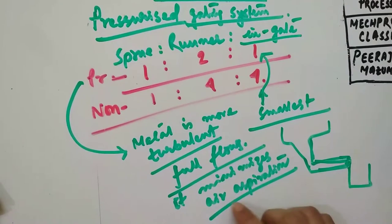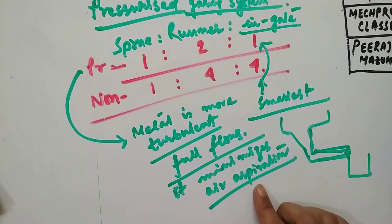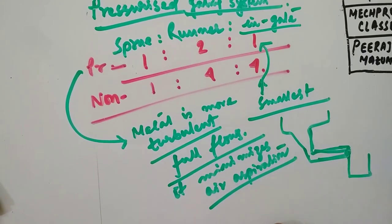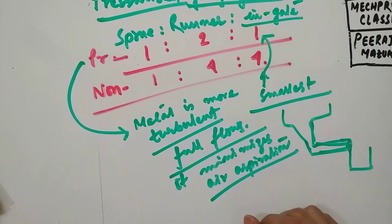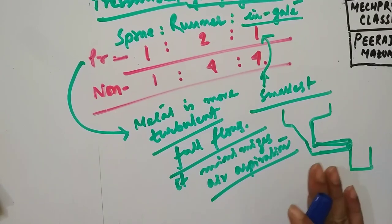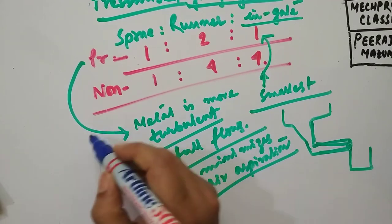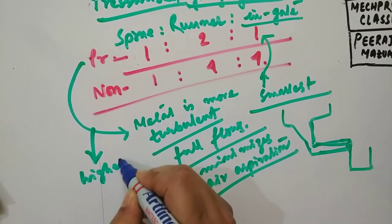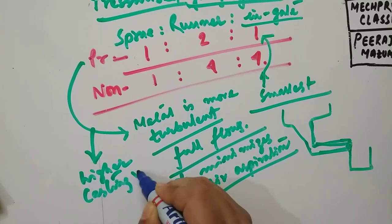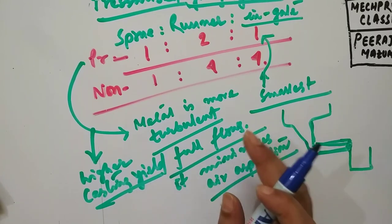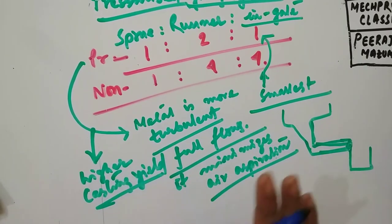If the air aspiration effect is not maintained, the casting will be defective, as because the air will be entrapped during solidification of the metal and the final product will be defective. When multiple gates are used, this system allows all gates to flow full. So these systems generally provide a higher casting yield, since the volume of metal used up in the runners and gates is reduced.